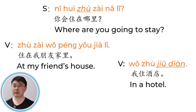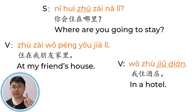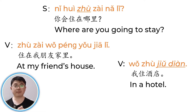你会住在哪里? 会 means well or be going to. 哪里 means where. Where are you going to stay? Answer: 住在我朋友家里. 住 means live or stay, 朋友 means friend, 家 means home or house. I live in my friend's house. Another answer: 我住酒店. 酒店 means hotel — I live in a hotel.